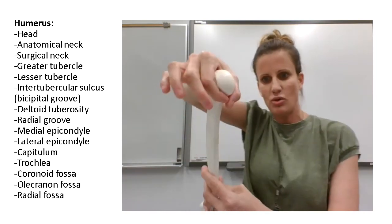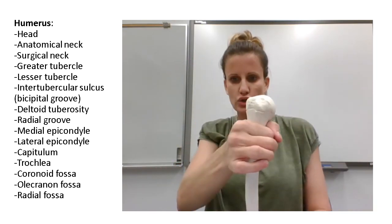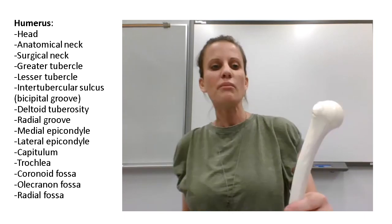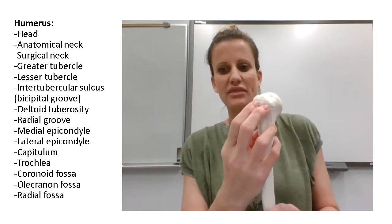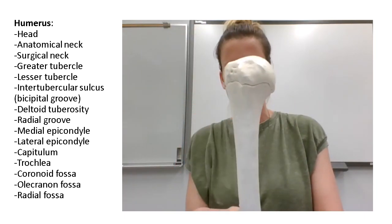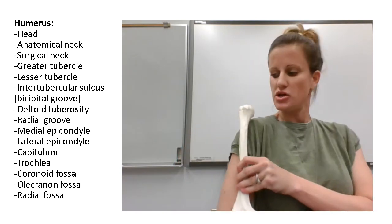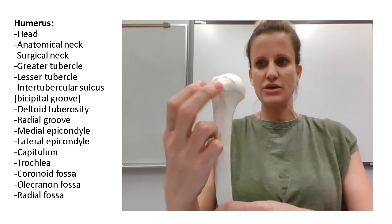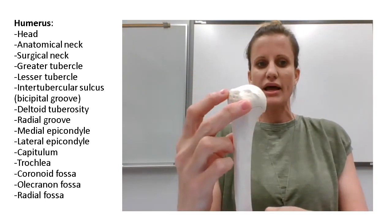So the anatomical neck is up here, and the surgical neck is here. When we look at the top of the bone as it would sit in your arm, we see the anterior aspect and then the lateral aspect.